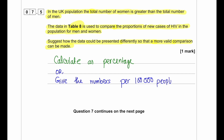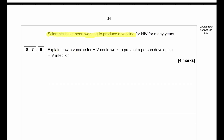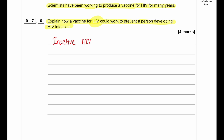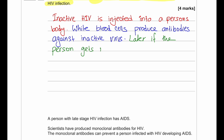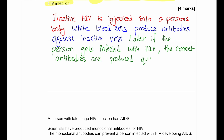Scientists have been working to produce a vaccine for HIV. Explain how a vaccine for HIV could work: inject inactive HIV virus into the body. White blood cells will produce antibodies against the inactive virus. Later, if the person is infected with HIV, specific antibodies are produced more rapidly. Those antibodies then destroy the active HIV virus that has entered the person's body.